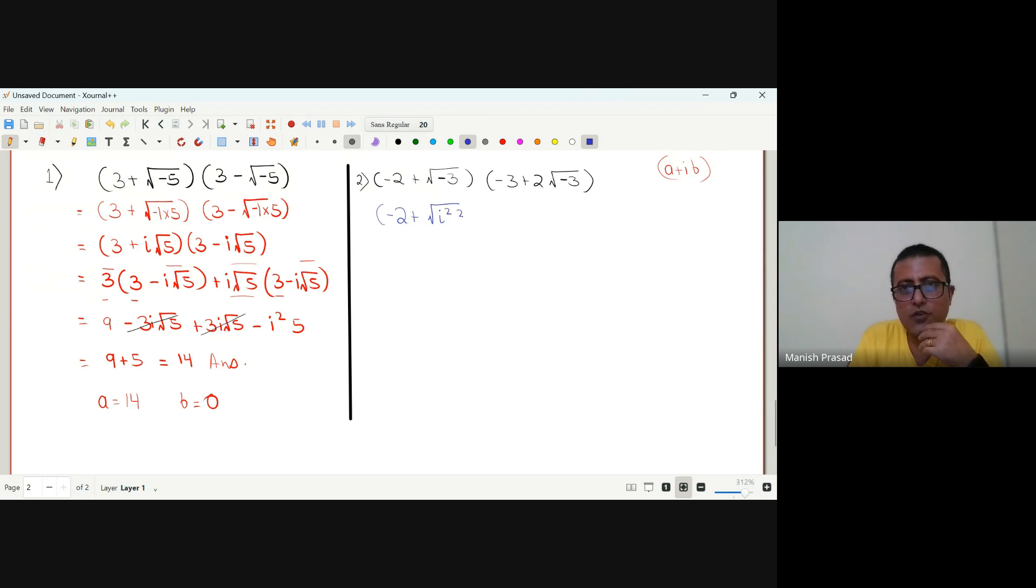i-square into 3, and then negative 3 plus 2i. Why did I put a bracket? i-square into 3, I will come out. So it is negative 2 plus root 3 i